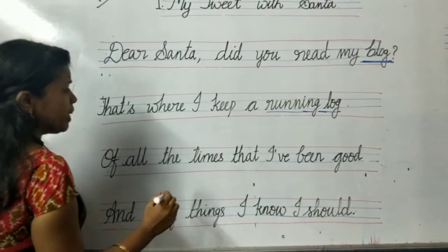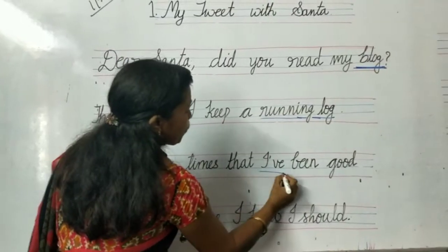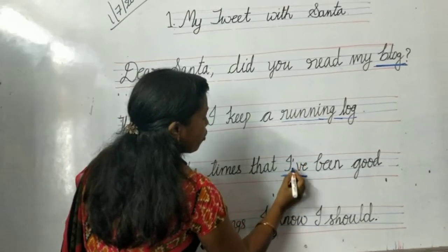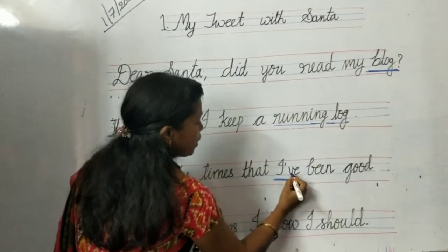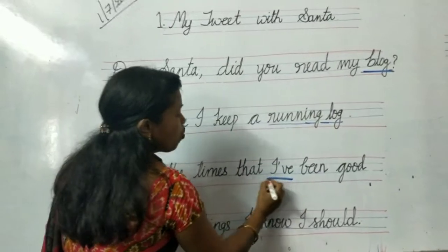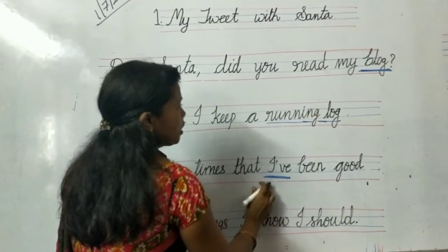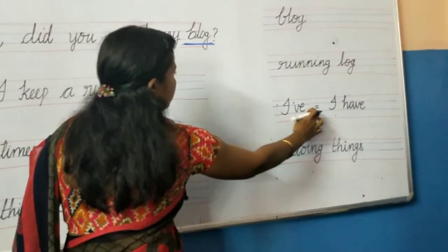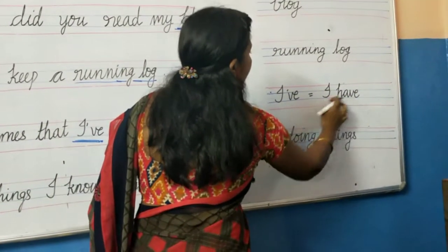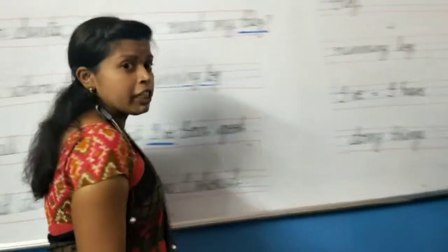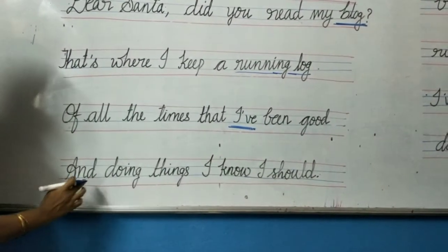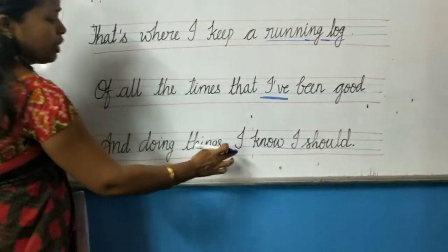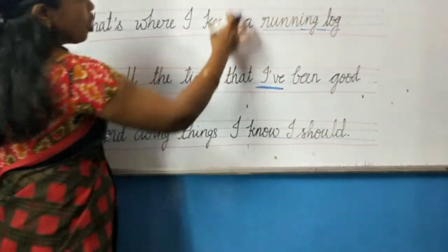See children, next — how do we pronounce this? I have written 'I' followed by an apostrophe and then B-E. So how do we pronounce it? We should pronounce it as 'I've.' How do we pronounce, children? 'I've.' Next: 'doing things, I know I should.' You can read 'I know.' These are the hard words.